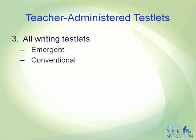All students participating in the DLM assessment are assessed in writing. There are two types of writing testlets. Emergent writing testlets are used for students who do not yet have or are working on early symbolic understanding. Conventional writing testlets are used for students who have symbolic understanding and can use writing tools to communicate. The system uses prior information about the student, including first contact survey responses, to determine which type of writing assessment the student should receive. Regardless of type, students can use any orthography-based tools for writing that offer access to the 26 letters of the alphabet.